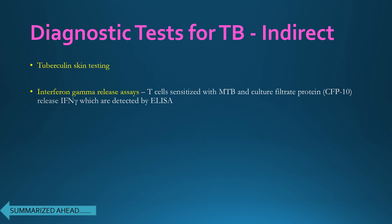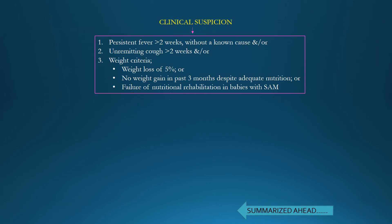Indirect methods for diagnosing tuberculosis include tuberculin skin testing (also referred to as PPD or purified protein derivative testing) and interferon-gamma release assays (IGRA), where T-cells sensitized with MTB and culture filtrate protein release interferon-gamma, which is detected by ELISA.